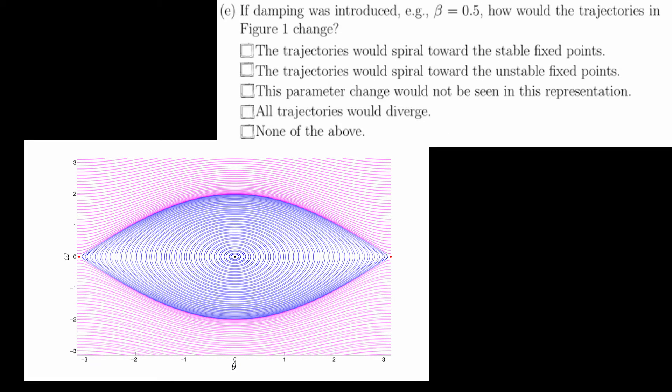Part e asks how the trajectories in the state space figure would change if damping was introduced. This is equivalent to asking, how would these trajectories change if this is a real-world pendulum? Since in the real world, we have friction.